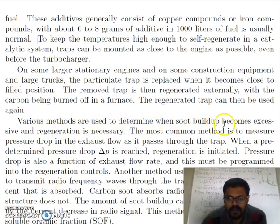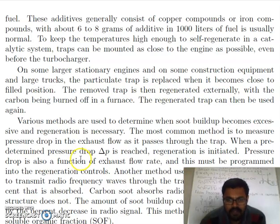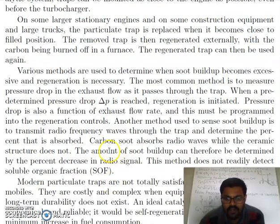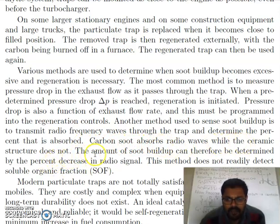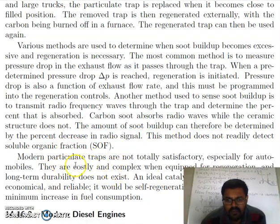Various methods are used to determine when soot buildup becomes excessive and regeneration is necessary. The most common method is to measure the pressure drop in the exhaust flow as it passes through the trap. When a predetermined pressure drop ΔP is reached, regeneration is initiated. Another method used to sense soot buildup is to transmit radio frequency waves through the trap and determine the percentage that is absorbed. Carbon soot absorbs radio waves while the ceramic structure does not, so the amount of soot buildup can be determined by the percent decrease in radio signal. This method does not readily detect the soluble organic fraction.